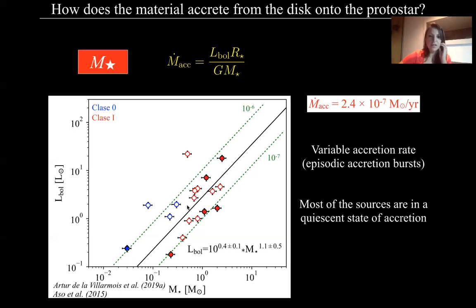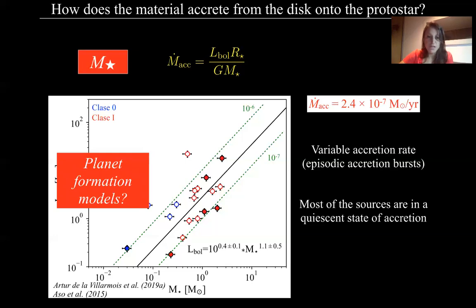And also the question here is, what about planet formation? Because usually in T-Tauri or Class 2 disks, for planet formation models they use a mass accretion rate of 10 to the minus 8 solar masses per year, and that will be something like here. Now the question is, how efficient is planet formation if we use these observed values of the mass accretion rate?